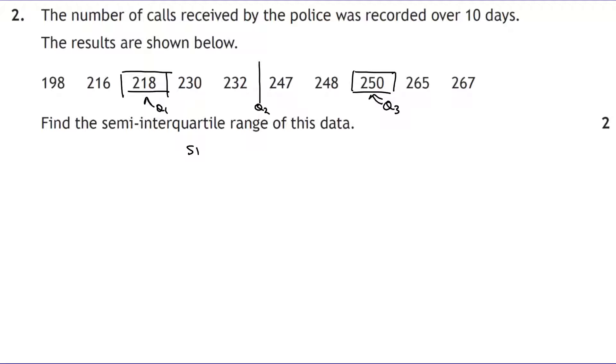So the semi-interquartile range is q3 minus q1 over 2. So we'll get 250 take away 218 divided by 2. That is 32 divided by 2, which is 16.